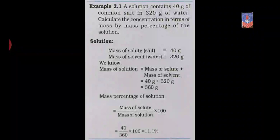Substituting values: 40 grams upon 360 grams into 100. After calculation you get 11.1%. The mass of solute is 40 grams of common salt, the total solution mass is 360 grams. So the answer is 11.1%. It is very easy — just apply mass of solute upon mass of solution into 100.